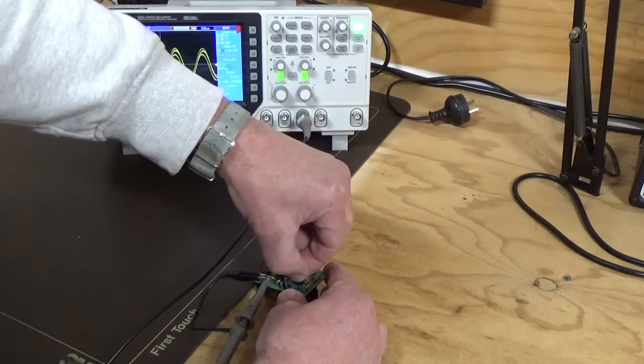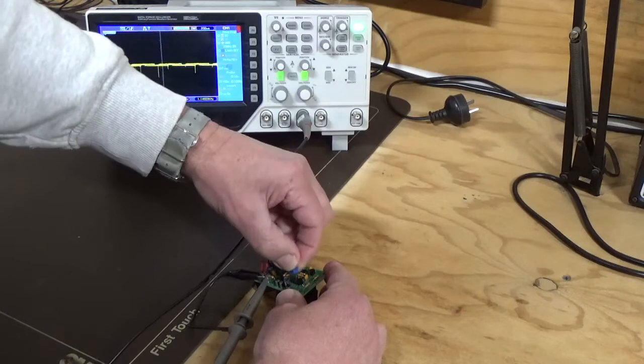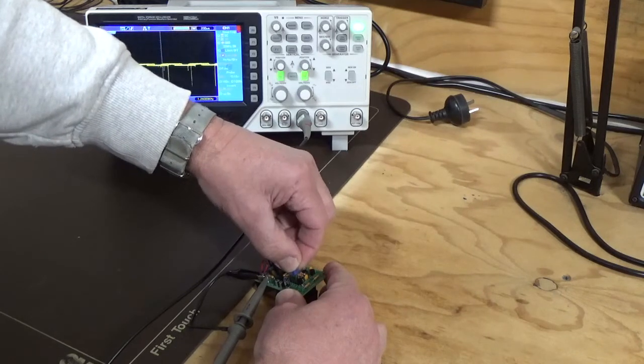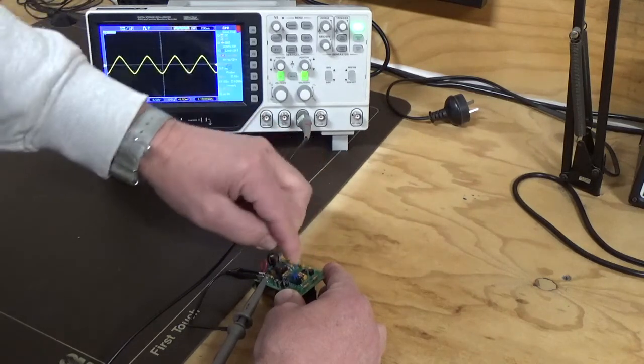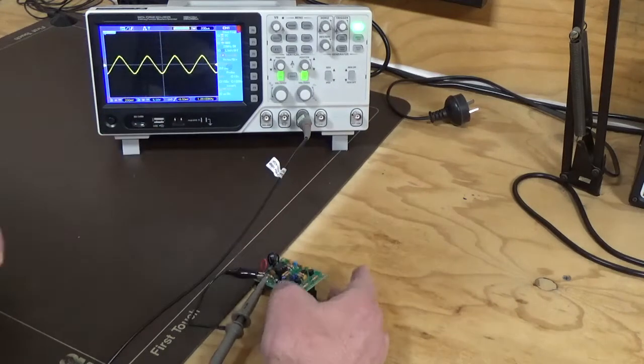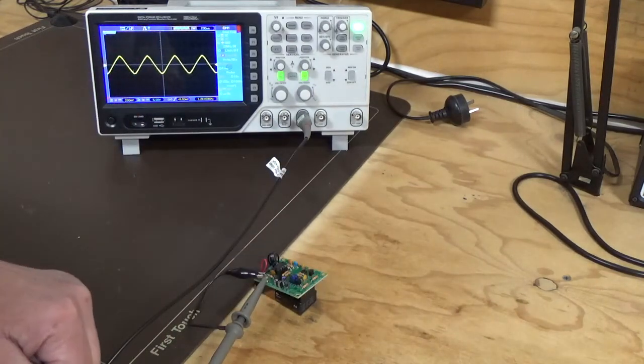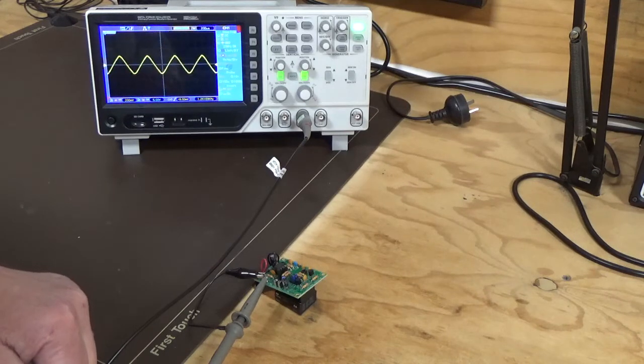I'll just swap over from the sine wave. So I'm just going to take the little jumper off, move it down to the next position. Put that on. And you can see there, you get a triangular or sawtooth waveform.